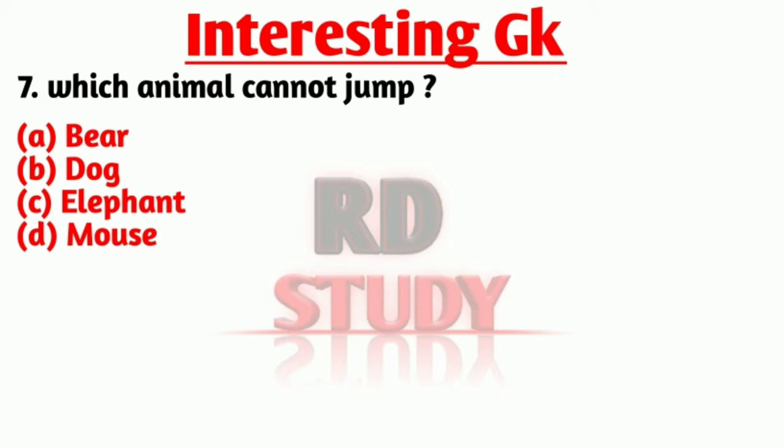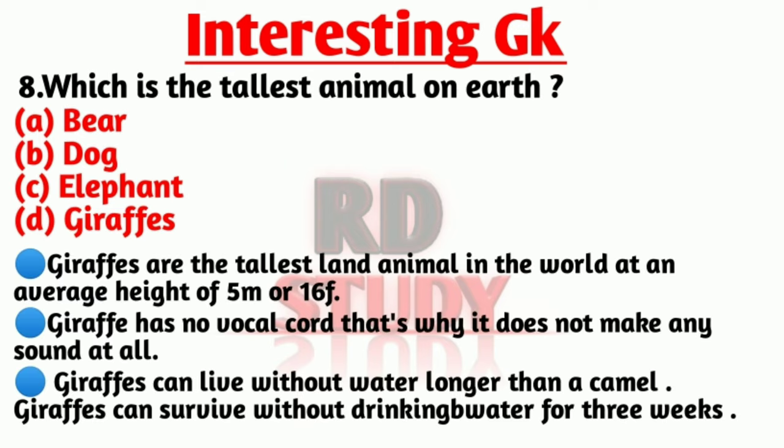Question number 7 is: which animal cannot jump? The right answer is option C, Elephant. Our next question is: which is the tallest animal on earth?